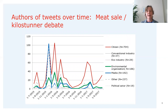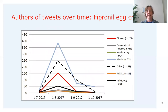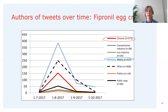In the meat sale case, individual citizens again participated very actively on Twitter, with media as the second most active stakeholder category. Environmental organizations — mainly animal welfare organizations in the Netherlands — were also quite active in this debate. In the fipronil egg crisis, which had a shorter time span as it was one incident rather than an ongoing issue, citizens were quite active but the main actor type was media. Public organizations such as health care organizations and food authorities were also notably active.